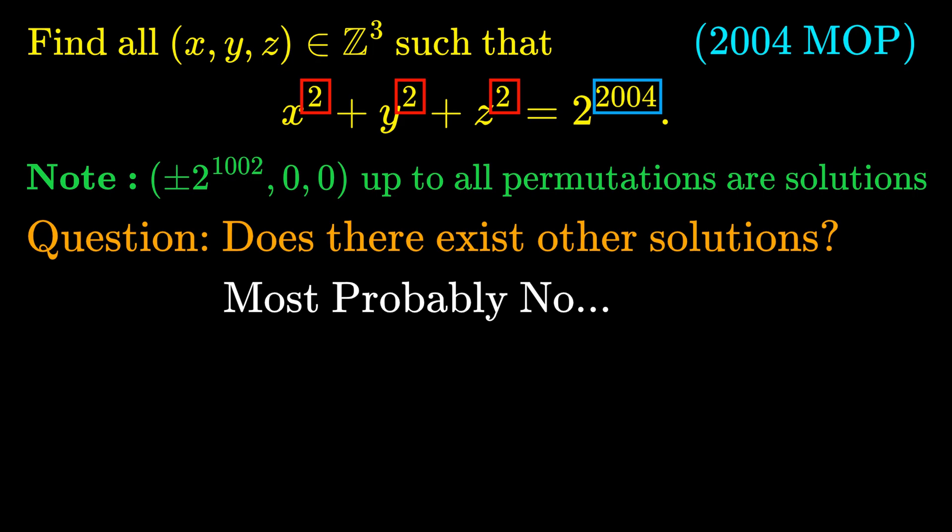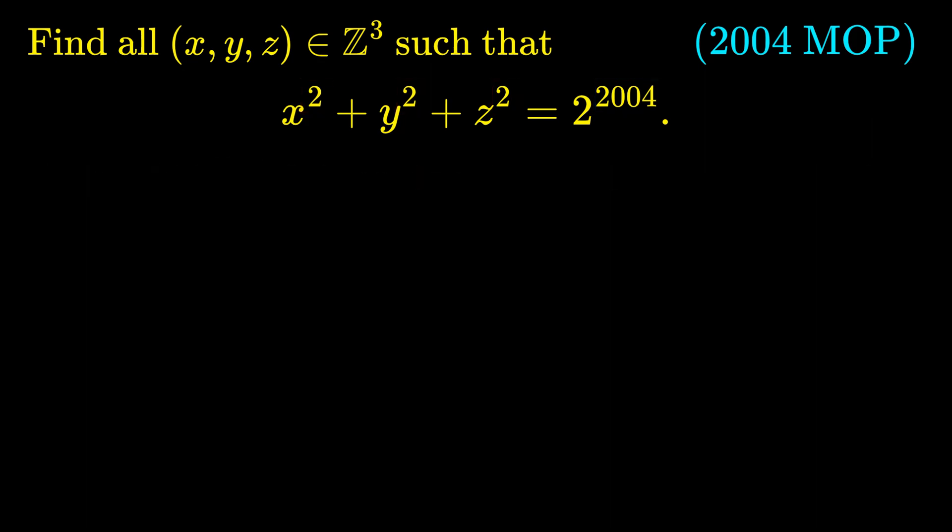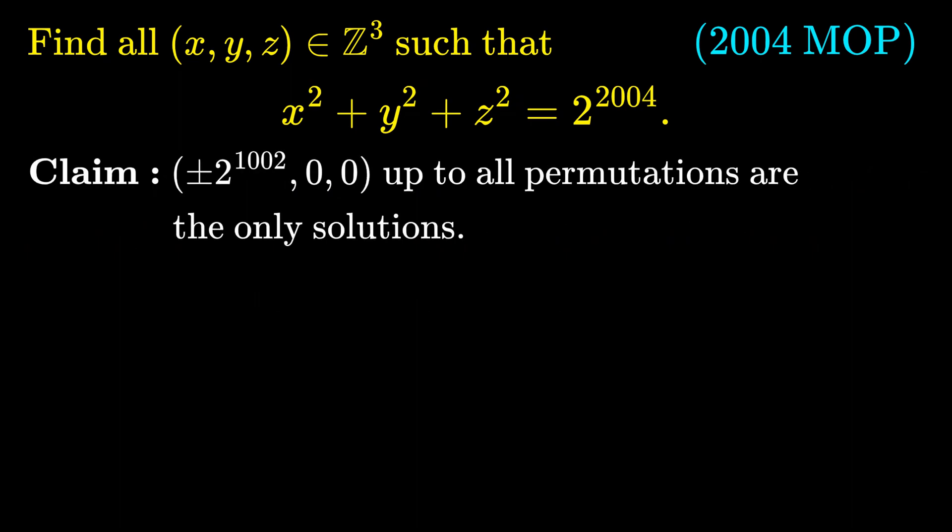Just like any other math contest problem, you can easily guess the obvious solutions, but the main part of the problem is to show that they are the only solutions that exist. Having said that, I claim that the integer triples we have just guessed are the only solutions to the equation given. We now prove that they are the only ones.